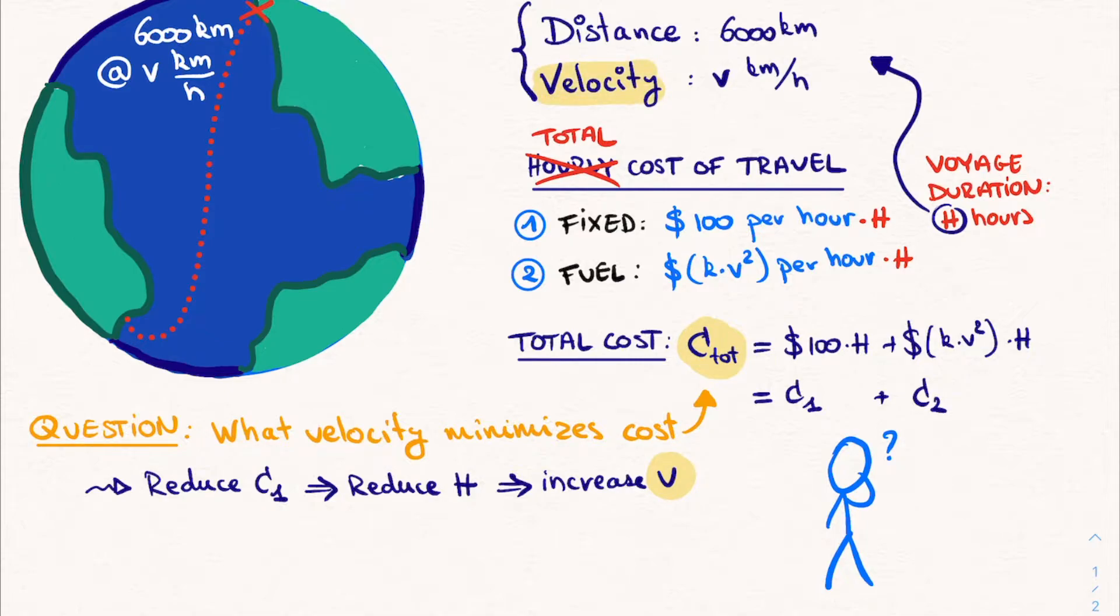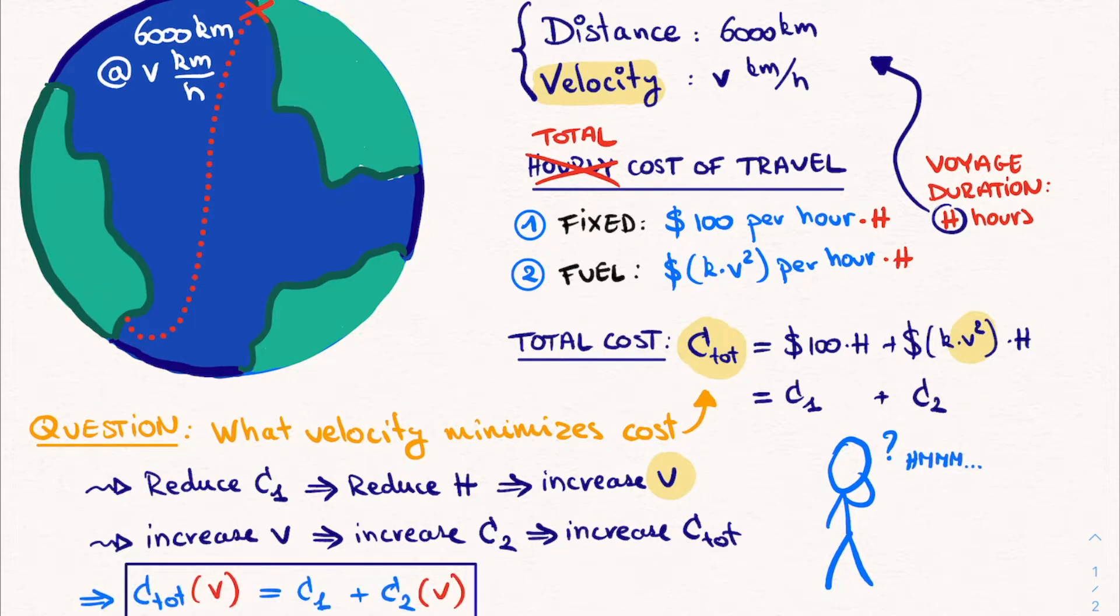However, it's not that simple. Because if we increase our velocity V, we see that it increases our fuel cost, C2. Which depends on V. In fact, it depends on V squared. And thus, by increasing C2, we increase the total cost. So increasing the velocity will increase the total cost. Therefore, we clearly have a trade-off here. If we increase our velocity, then our fixed cost will reduce because we are traveling for less hours. However, our fuel cost will increase. And it is in this sense that the question asks us which velocity minimizes this trade-off, such that the total cost is as low as possible. And that's what we are going to figure out using derivatives.